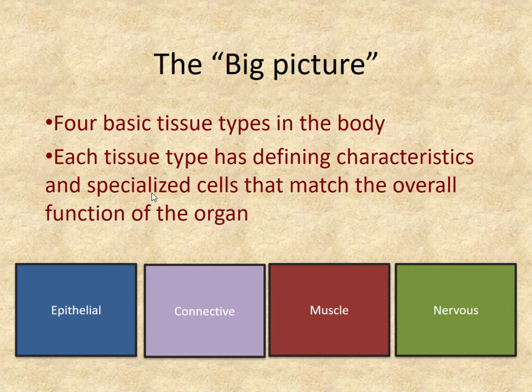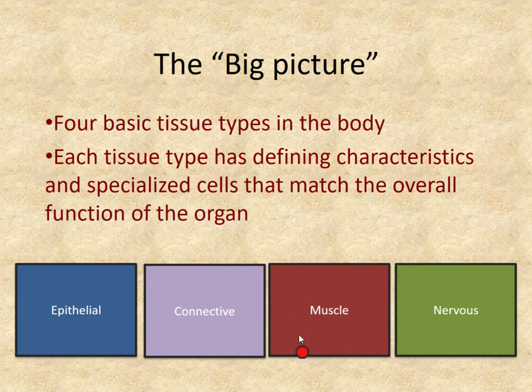The big picture is that there are four basic tissue types in the body. Each tissue type has its own characteristics and specialized cells that make it unique. The cells and characteristics in one category do not go into another — we don't have any overlap. It's either epithelial, connective, muscle, or nervous tissue, and the cells belonging to these different tissues do not mix.